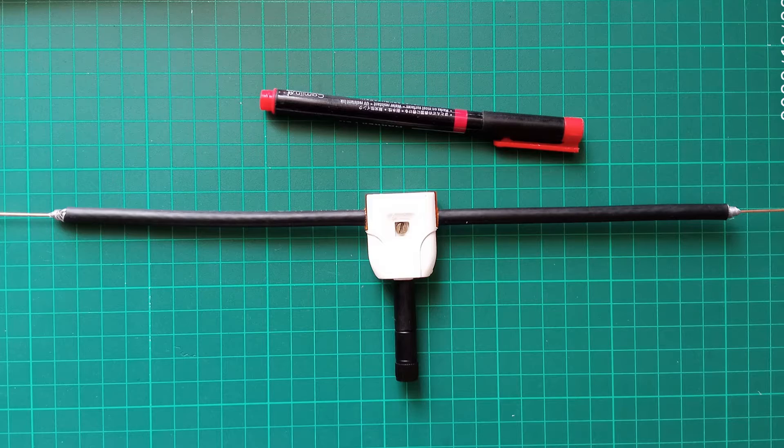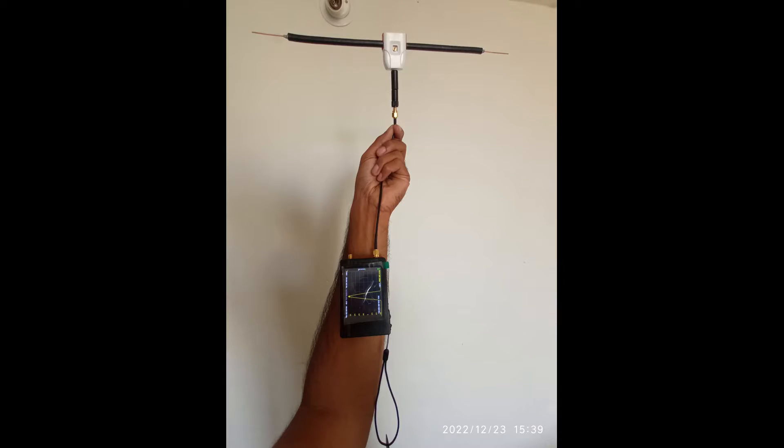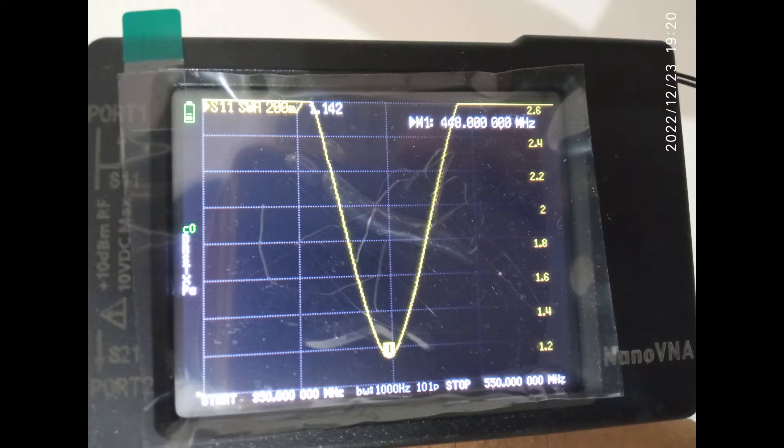The antenna is tuned with the help of nanoVNA and care was taken to measure the tuning frequency properly avoiding any metallic objects or plastic elements nearby and managing to tune it at 448 megahertz frequency.